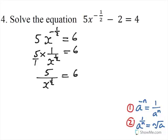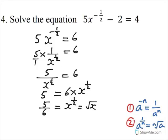If we multiply both sides by x to the power of 1 half, we get 5 equals 6 times x to the power of 1 half. If we divide both sides by 6, we get 5 over 6 is equal to x to the power of 1 half, which is the square root of x based on rule number 2.